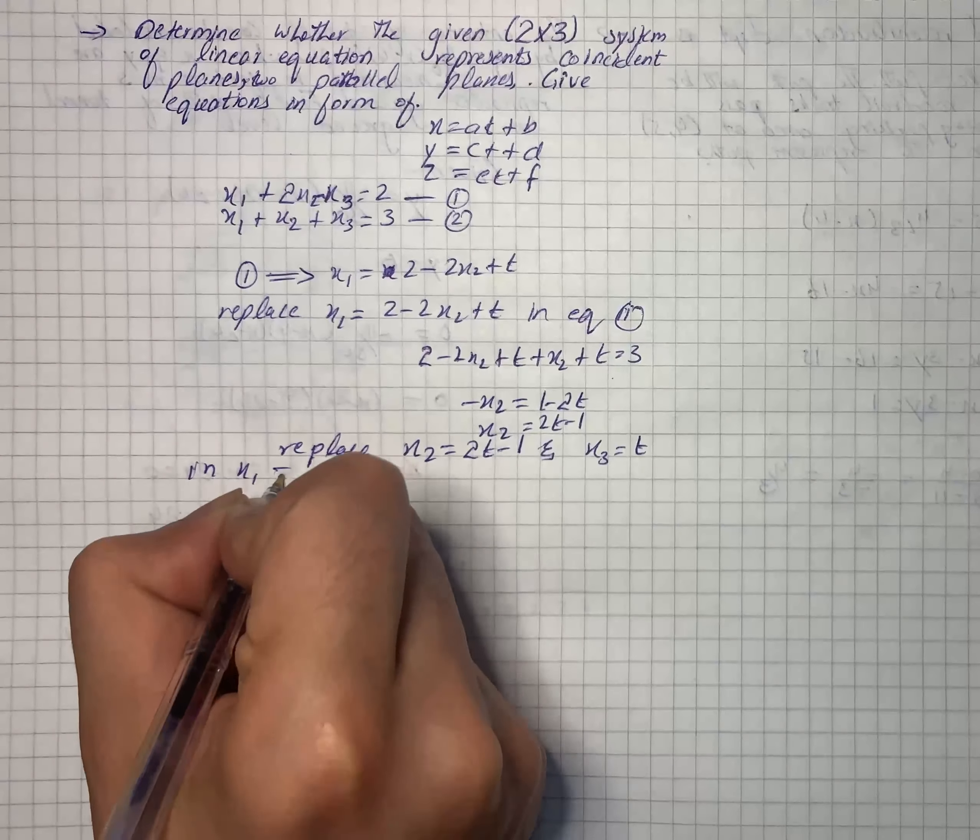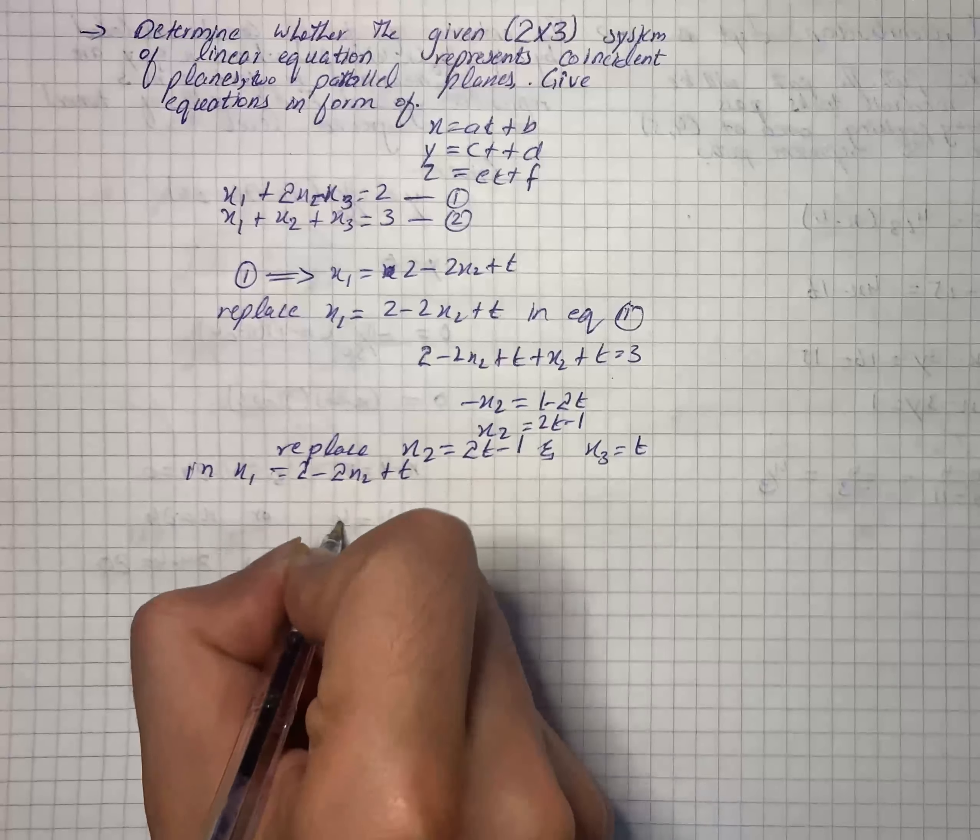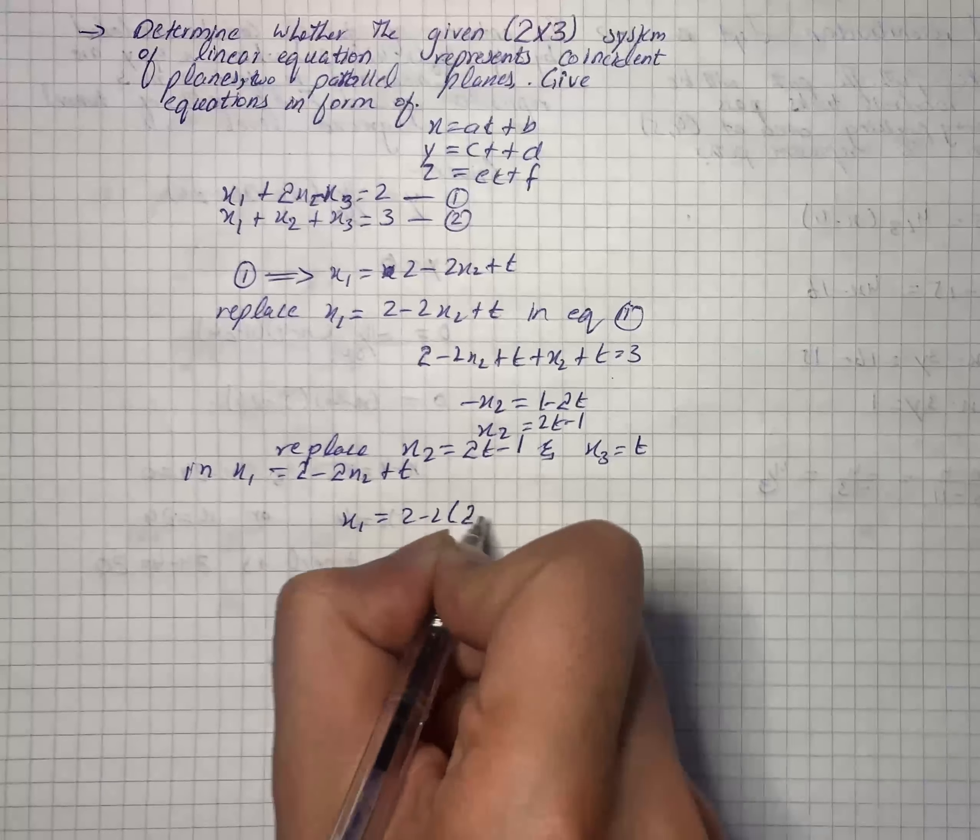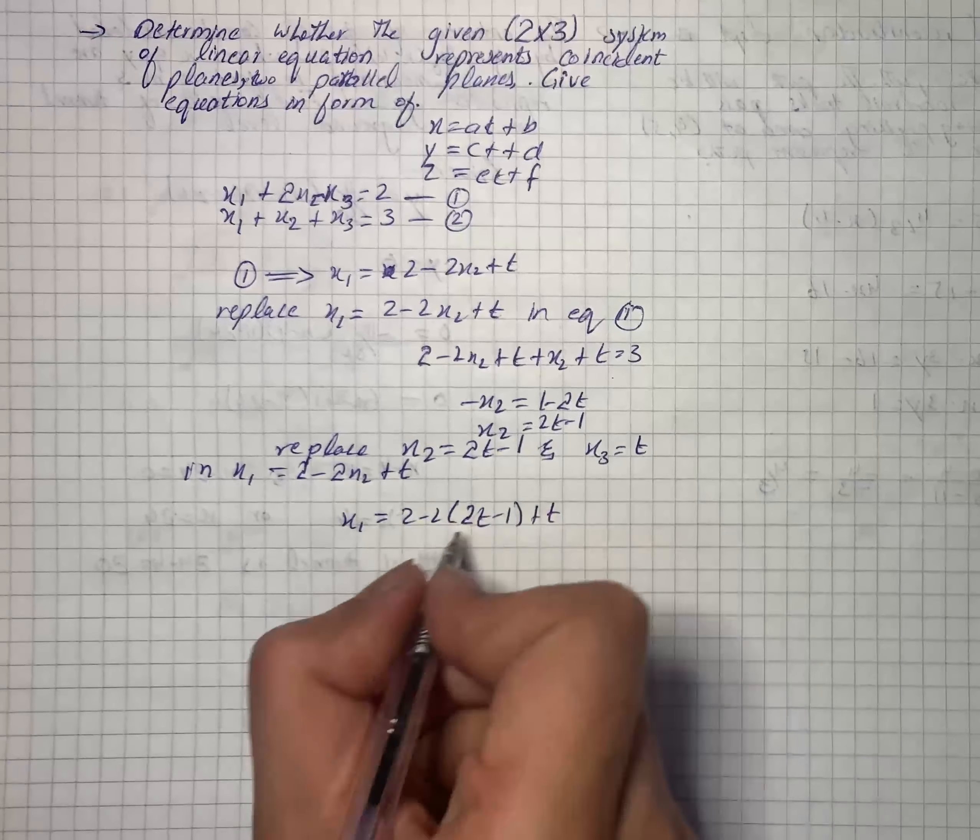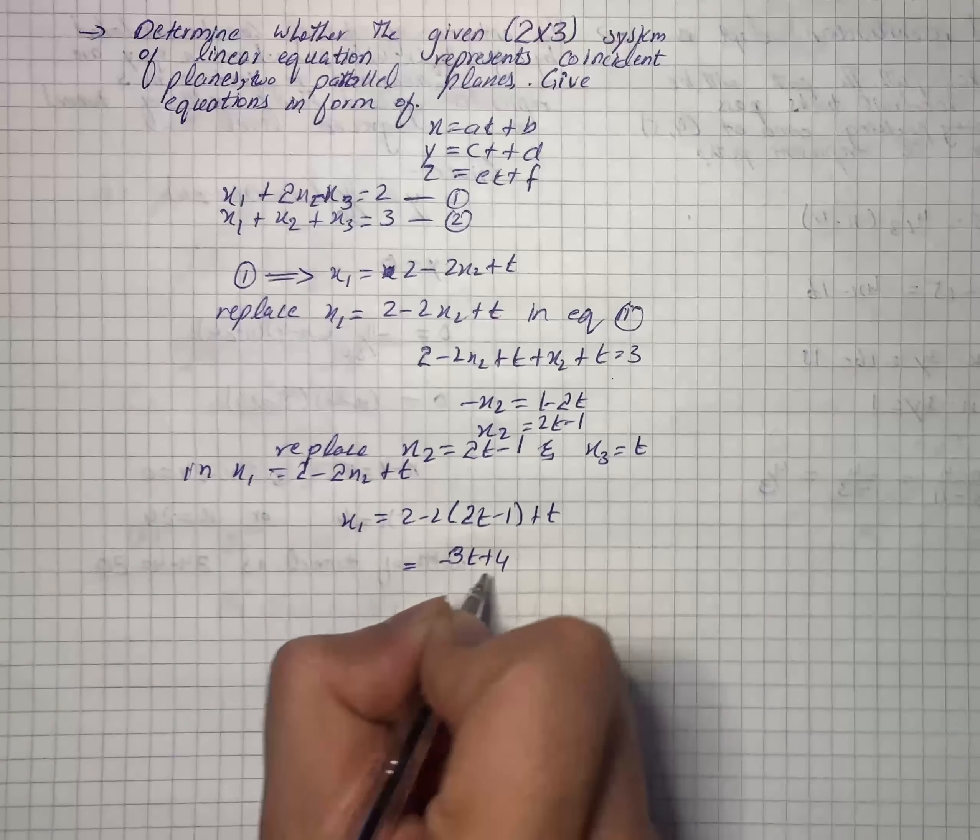We will substitute in x₁ = 2 - 2x₂ + x₃. So we have x₁ = 2 - 2(2t - 1) + t. That is equal to -3t + 4.